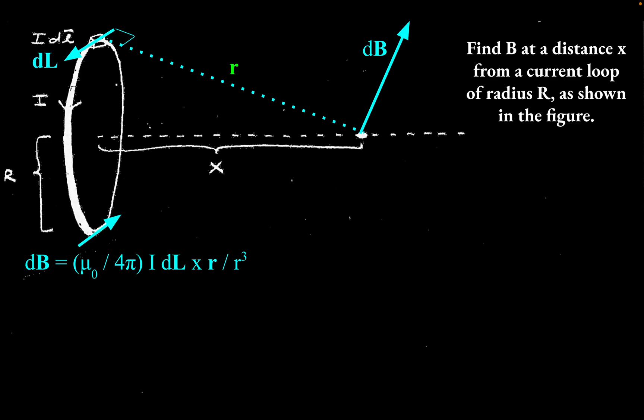We could pick another DL. Here would be another DL at the bottom of that loop. It's carrying the current somewhat into the page here. And the R vector that goes with that one would point from the little bit of current up to the point that we care about. And the dB that's associated with that IDL would point this way, somewhat down and to the right.